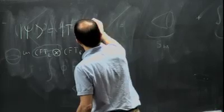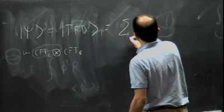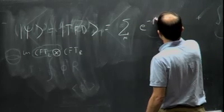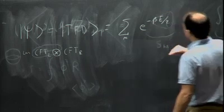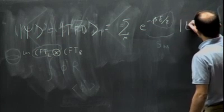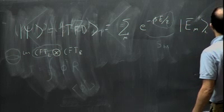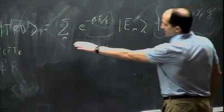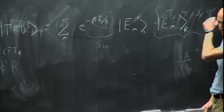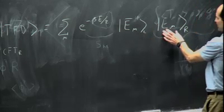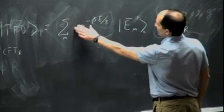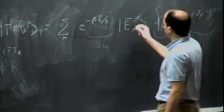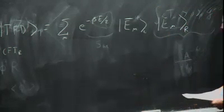This picture tells us what state we should consider. The state is called the Thermal Field Double — it was considered in the context of analyzing thermal field theories. This is a state in CFT_left ⊗ CFT_right, a state in the direct product of the two Hilbert spaces. It has the form: psi = sum_n e^{-β E_n / 2} |E_n⟩_L ⊗ |Ē_n⟩_R. We sum over all energy eigenstates with a factor of e^{-βE/2} — half of the usual Boltzmann factor — taking the same state on both the left and right.